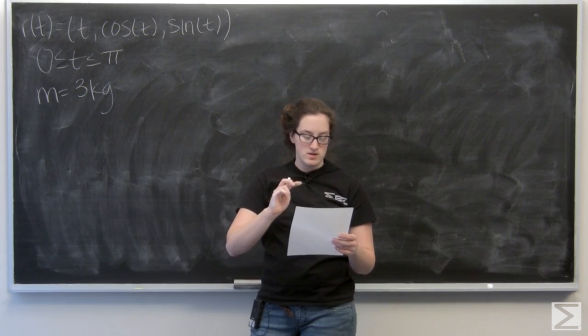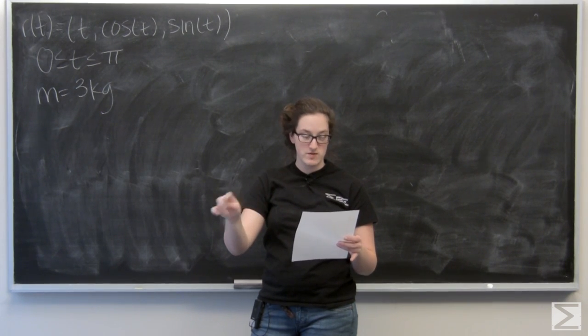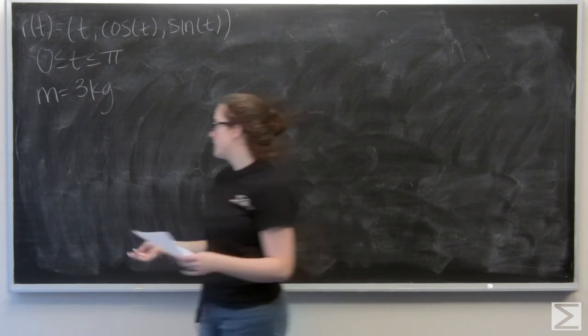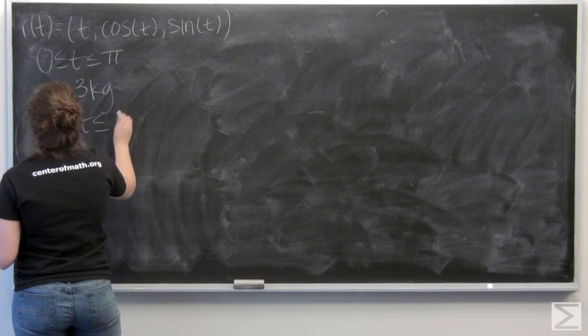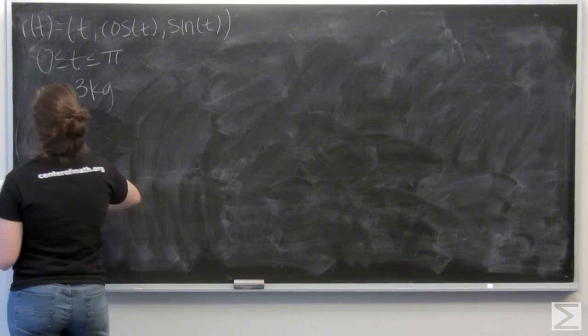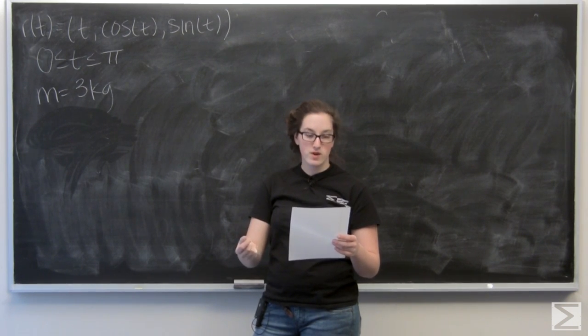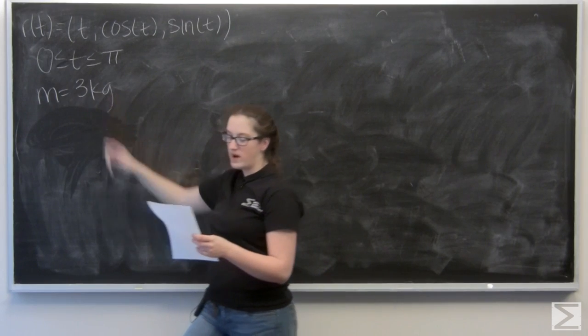Oh, and here my a is zero and my b is pi. So, calculate the work done by F on the particle between times zero and pi. Well, you probably noticed something, and it is that I'm not actually given that force field that I need.